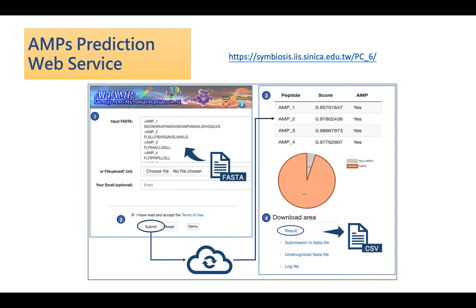Our research group also created an AMPs prediction web service. Users may submit a FASTA file with peptide sequences and will get a chart that indicates whether each peptide is an AMP. The users could also download the result in CSV form.